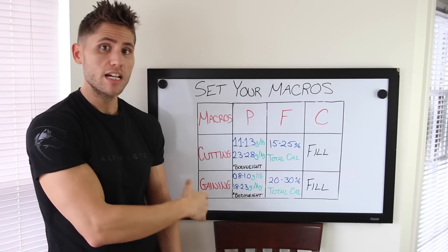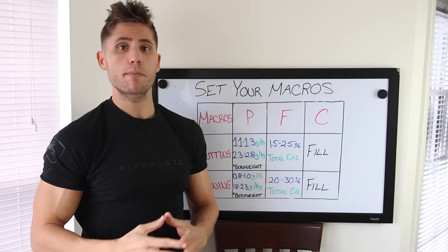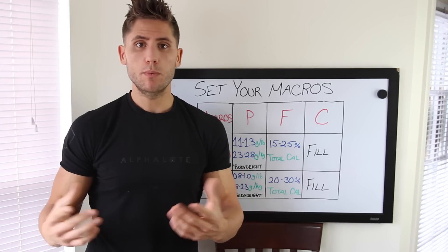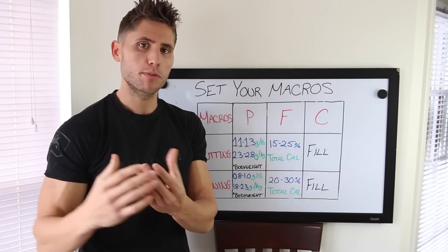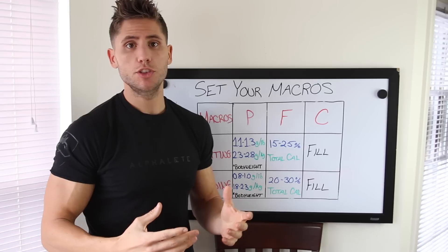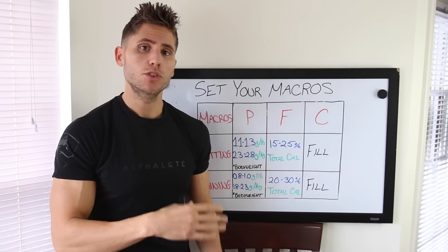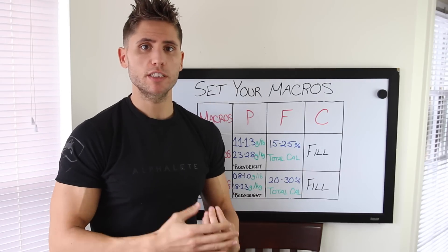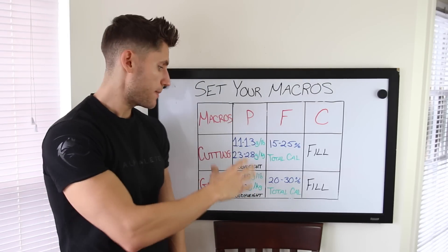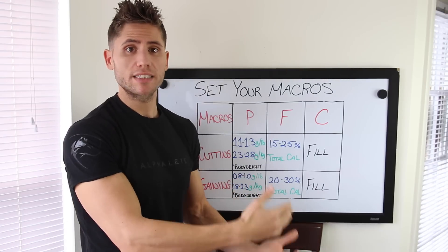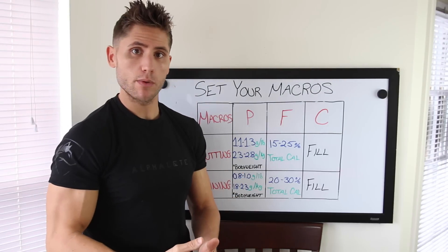When you jump into a gaining phase, you'll notice a lower protein intake: 0.8 to 1 gram per pound of body weight per day. You might think — protein builds muscle, so why would protein be lower when gaining? The reason is simply because you're in a calorie surplus, providing your body with much more energy, so there's less concern about preserving lean mass. Keeping protein a little lower allows you to bump up fats and carbs. In kilograms that's 1.8 to 2.3 grams per kilogram of body weight.